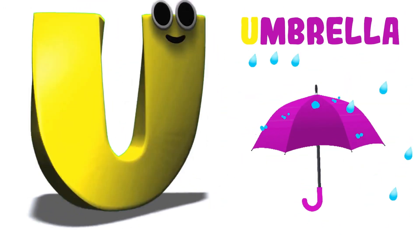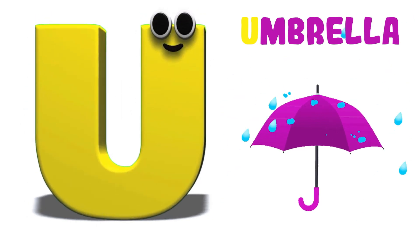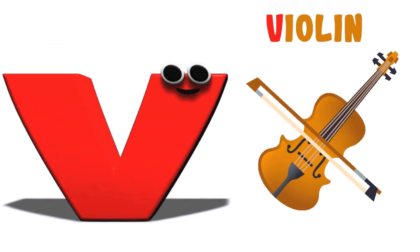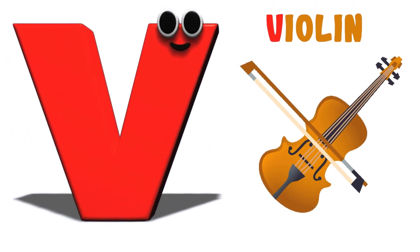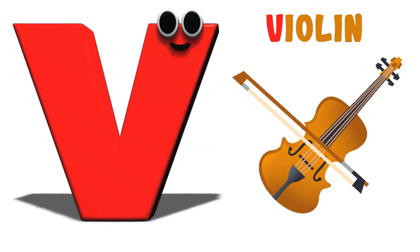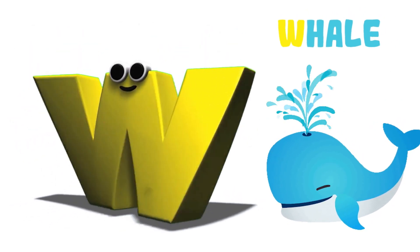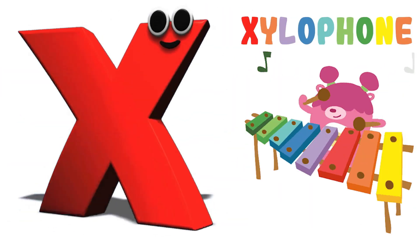U is for Umbrella, U-U-Umbrella, U-Umbrella. V is for Violin, V-V-Violin, V-Violin. W is for Whale, W-W-Whale, W-Whale.